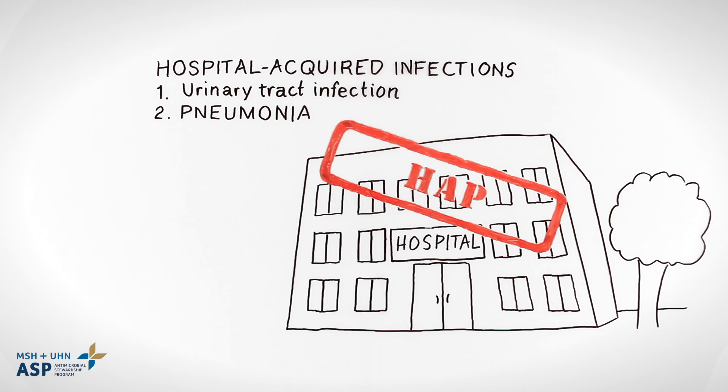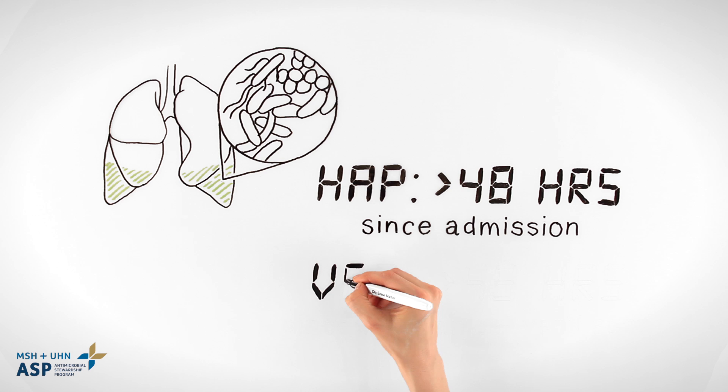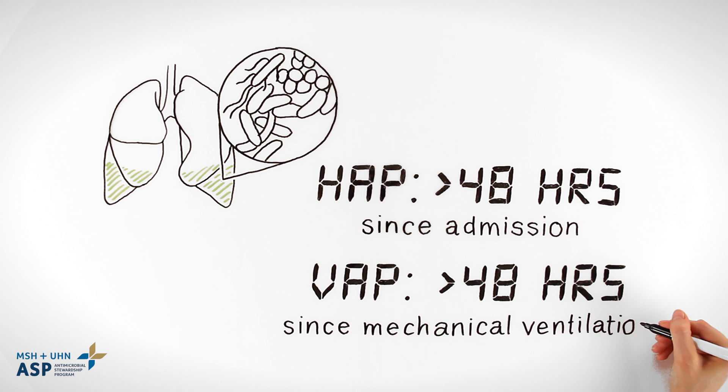HAP is the second most common hospital-acquired infection and occurs anywhere in the hospital. In the ICU, intubated patients develop ventilator-associated pneumonia, or VAP. HAP is defined as a pneumonia that develops more than 48 hours after admission, while a diagnosis of VAP requires patients to have been mechanically ventilated for more than 48 hours at the time of infection onset.